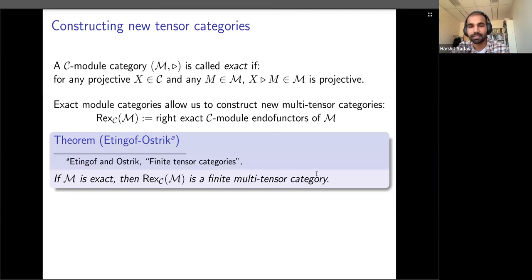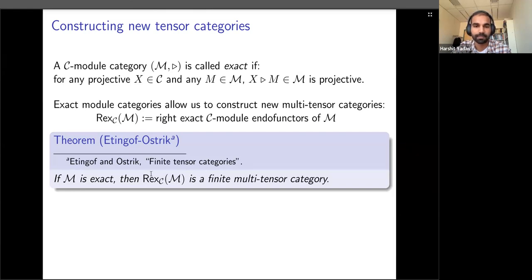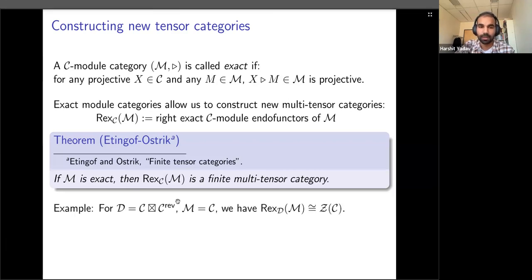A result of Etingof and Ostrik from the early 2000s says that this new category is a finite multi-tensor category — in particular it is rigid. So one way to produce new rigid tensor categories from something known is to look at module categories and their category of endofunctors.